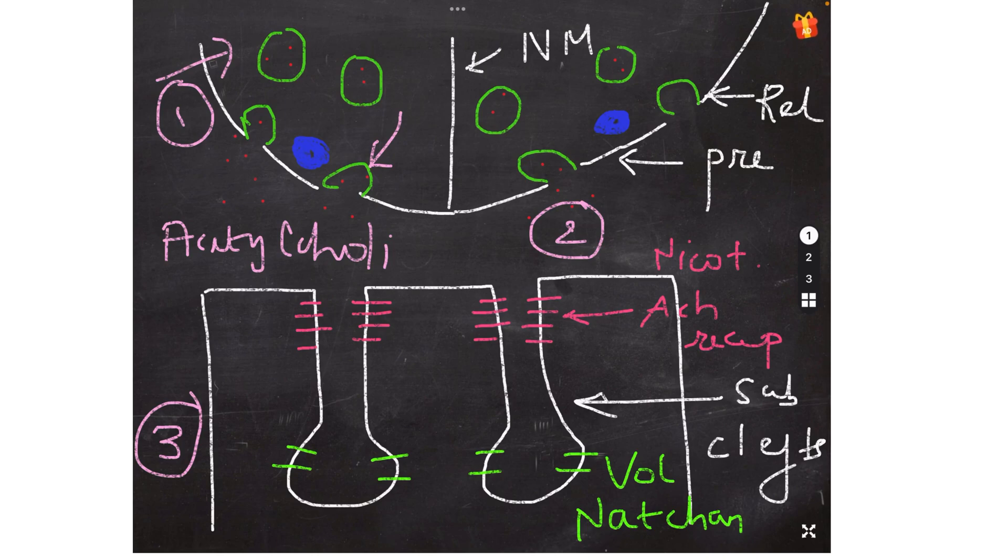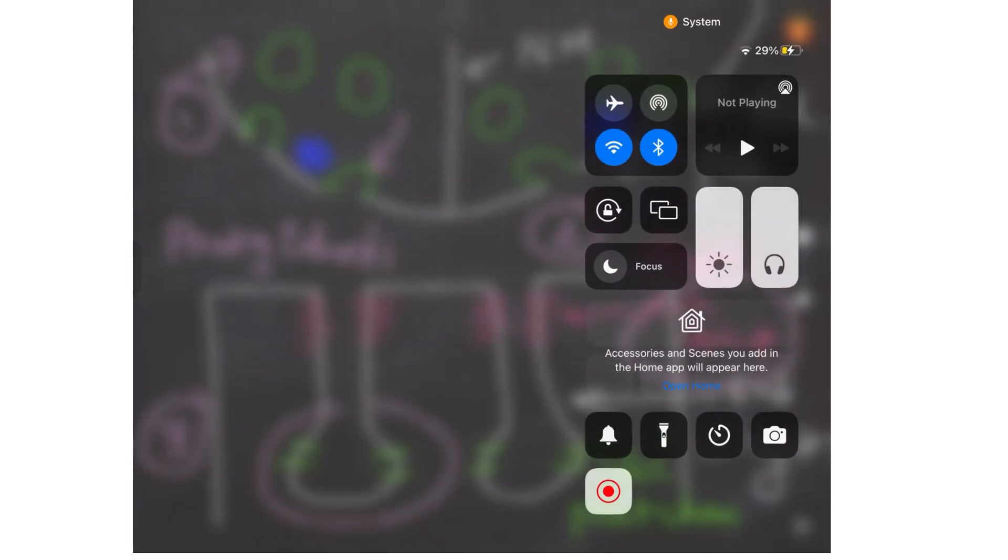Then we will see the function of acetylcholinesterase which is an enzyme, the structure of the ACH receptors, the nicotinic ACH receptors, the function of the voltage-gated sodium channels. In the end we will study the effect of blockades, the effect of various drugs on neuromuscular transmission, and conclude with the diseases which affect neuromuscular transmission, that is the applied physiology.